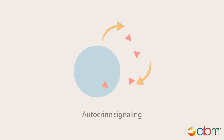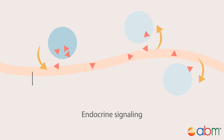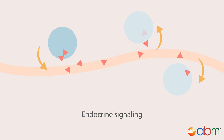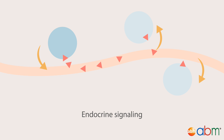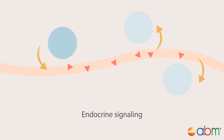Lastly, in endocrine signaling, growth factor and cytokine components are secreted into the blood and are then carried by blood and tissue fluids onto target cells, whereby subsequent responses are triggered.